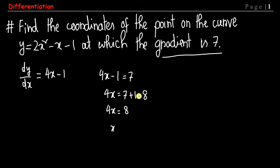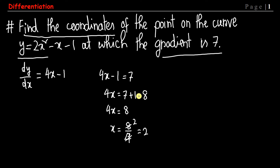4x equals 8, so x equals 8 divided by 4, which gives us x equals 2. This is the value of x where the gradient is 7. Since the question asks for coordinates — both x and y — we need to put x equals 2 into the main equation.